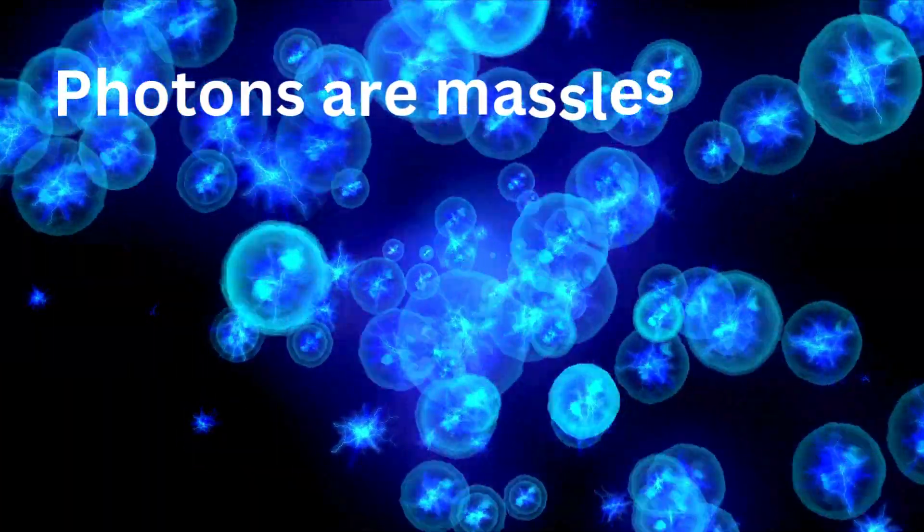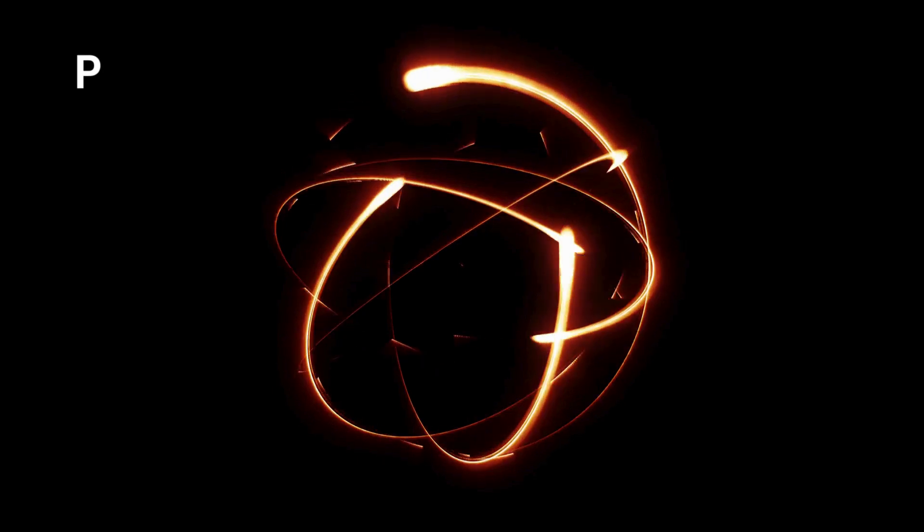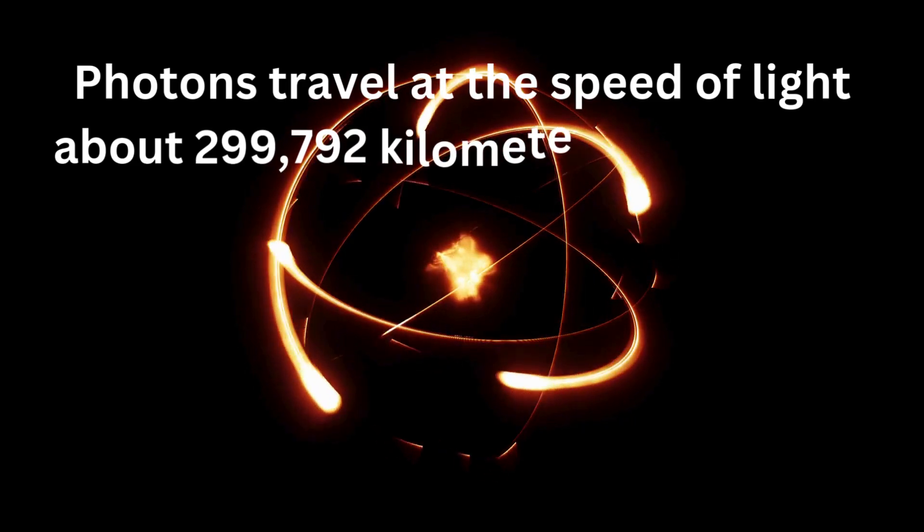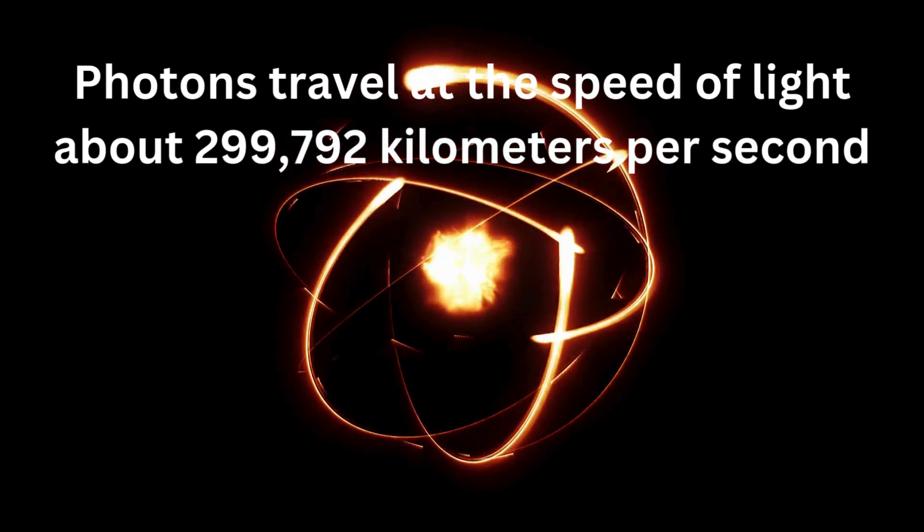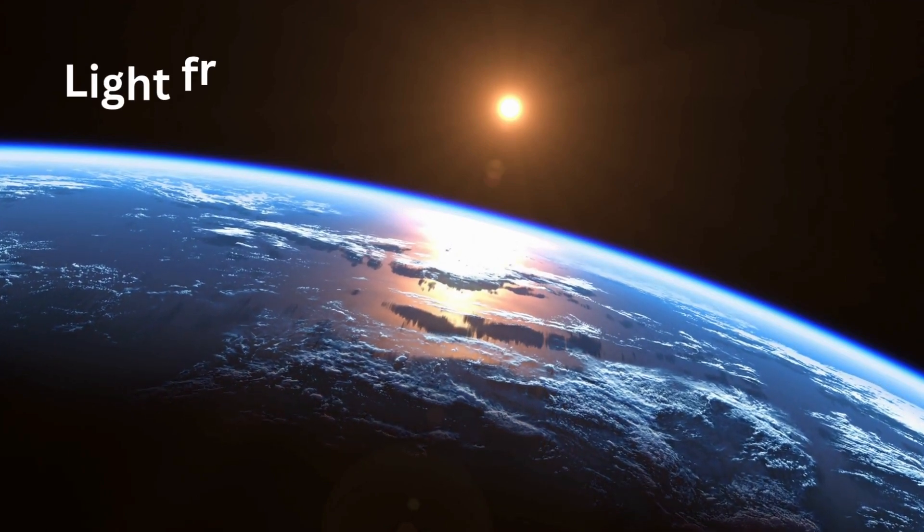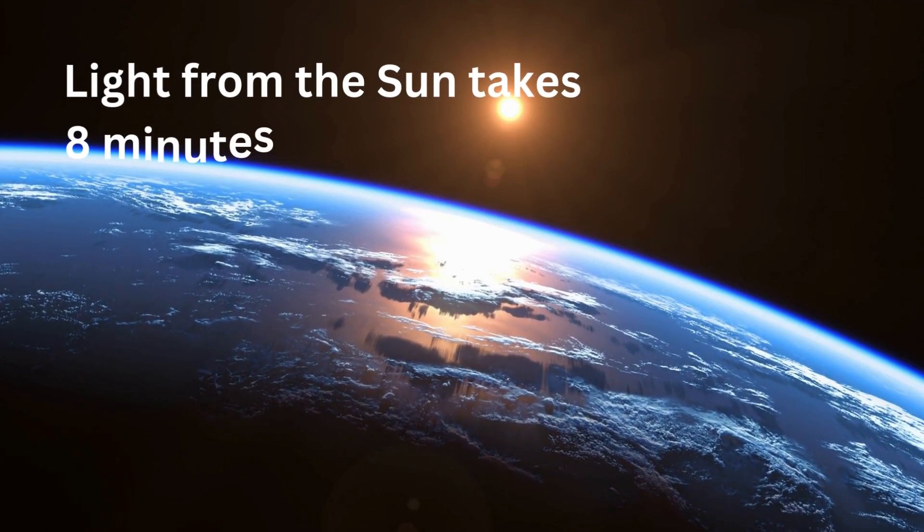Photons are fascinating particles. They are massless and travel at the speed of light, about 299,792 kilometers per second in a vacuum. This speed means that photons can cover vast distances incredibly quickly. For example, light from the sun takes about 8 minutes to reach Earth.